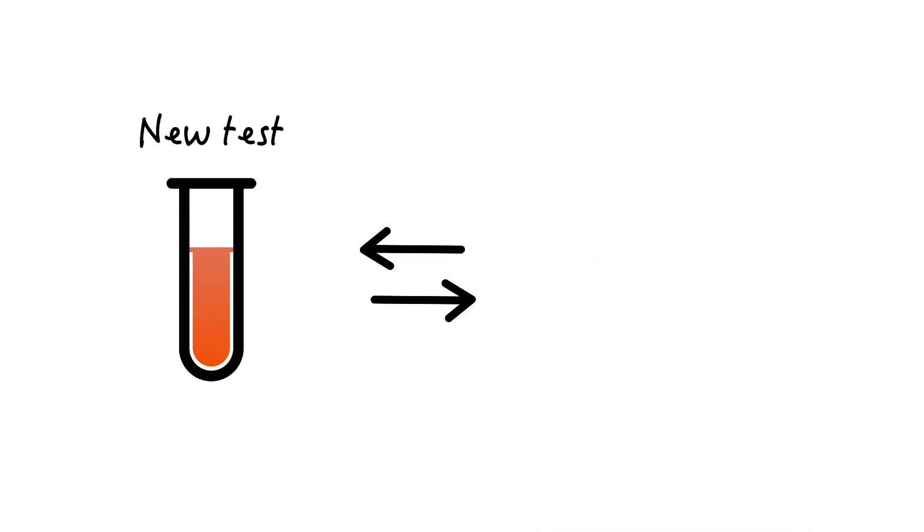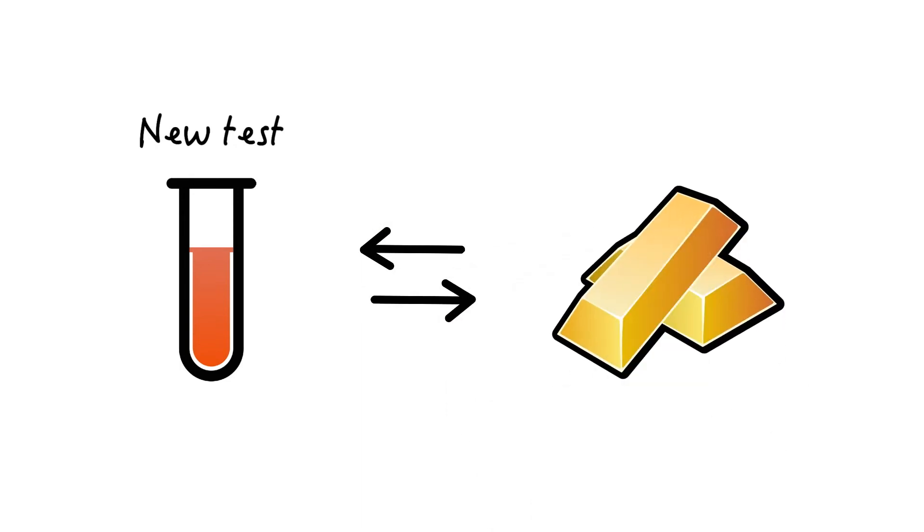Validity is usually determined when a test is newly introduced, and when that's done, it's compared to a gold standard. So a lab test assessing the presence of Helicobacter pylori could be compared to a gold standard of, let's say, biopsy. Or a test of coronary artery disease could be compared to the gold standard of coronary angiography.